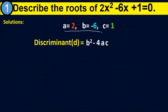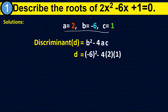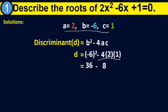Substituting all these values to the discriminant, we have: d equals negative 6 squared, minus 4 times 2 times 1. Simplifying further: negative 6 squared equals 36, and 4 times 2 times 1 equals 8, so we have minus 8. Therefore, 36 minus 8 equals 28. Our discriminant is 28.